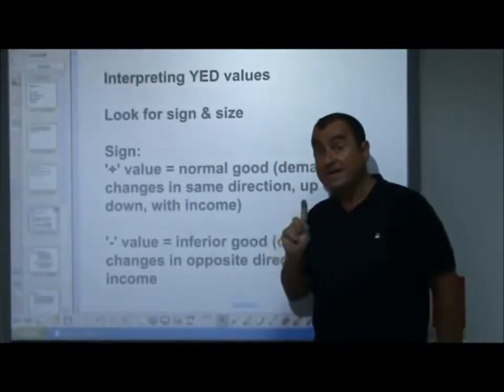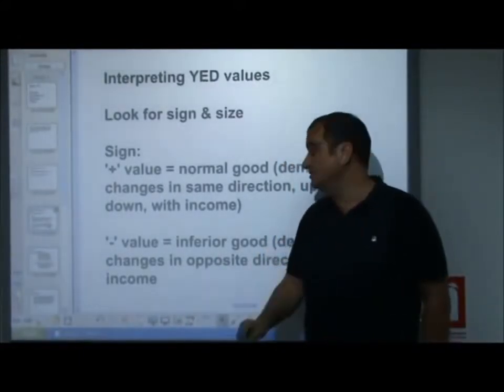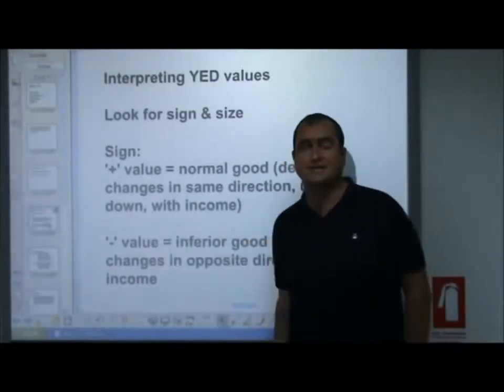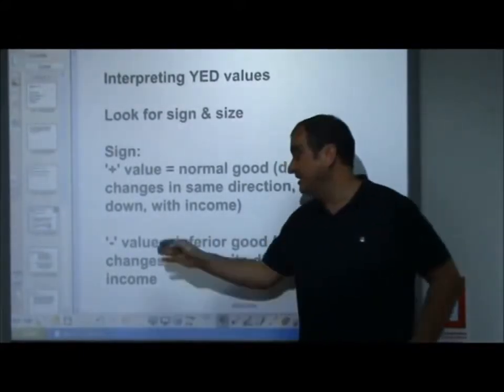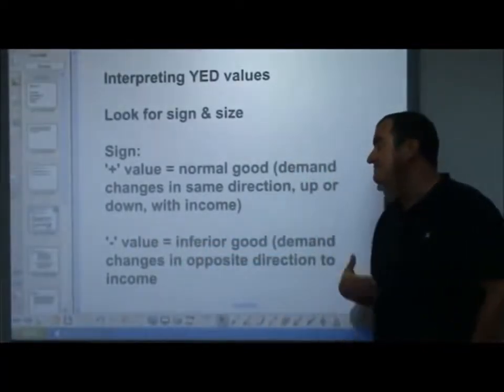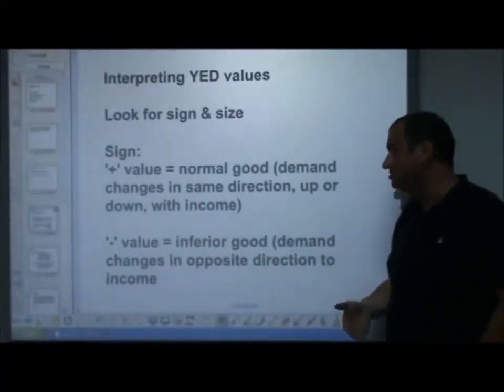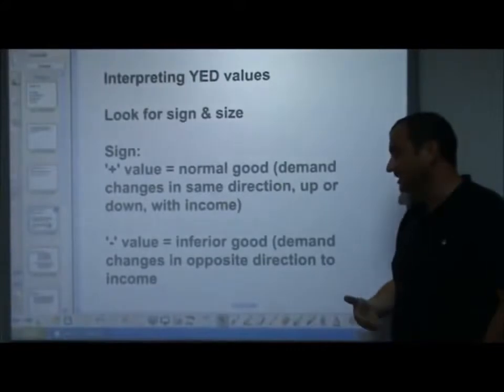But if the YED calculation comes out as negative, it's an inferior good. Demand changes in the opposite direction to income.